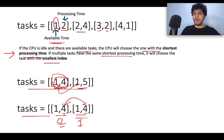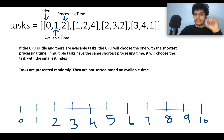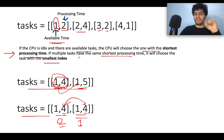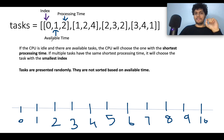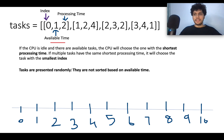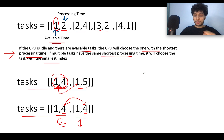From this analysis, index becomes a very important property because of the second constraint. Along with available time and processing time, the index must also be stored so the CPU can resolve collisions — deciding which task to pick when processing times are equal. Also note: the tasks are not given in sorted order by available time — they are randomly given, even if the example appears sorted.